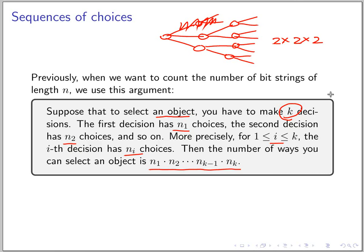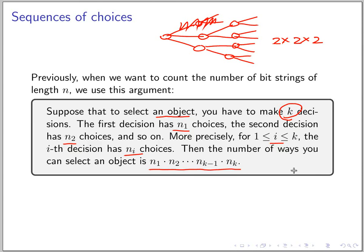To select an object. That's the principle that we use. So let's try to apply this to some other contexts. Let's look at the first example. If you have a car license number that consists of two English letters, say AZ, and one number from 1 to 9999, say 123, that's one example of a car license number.